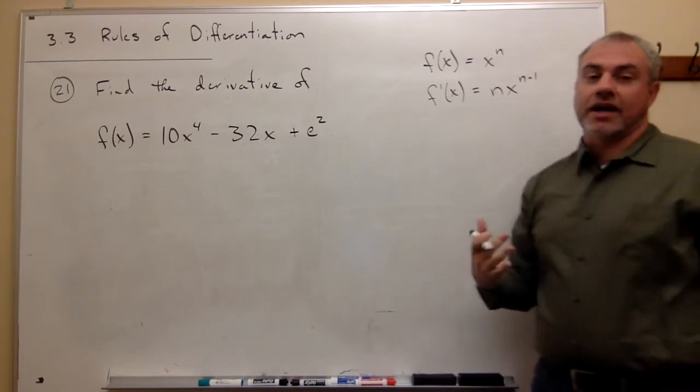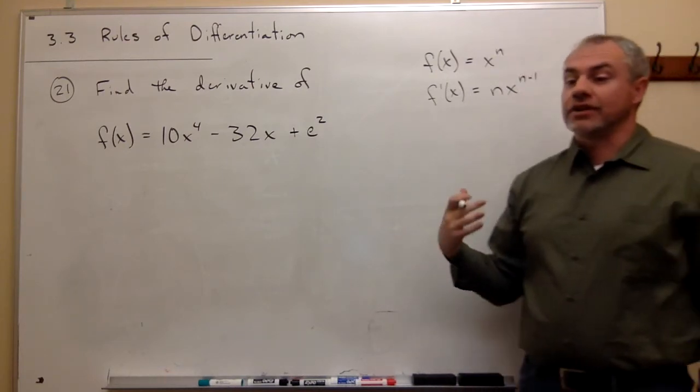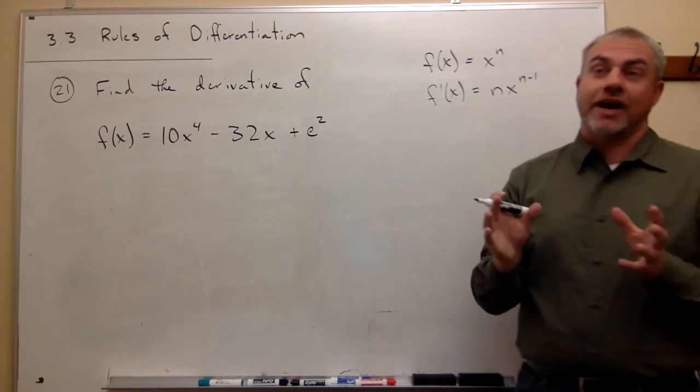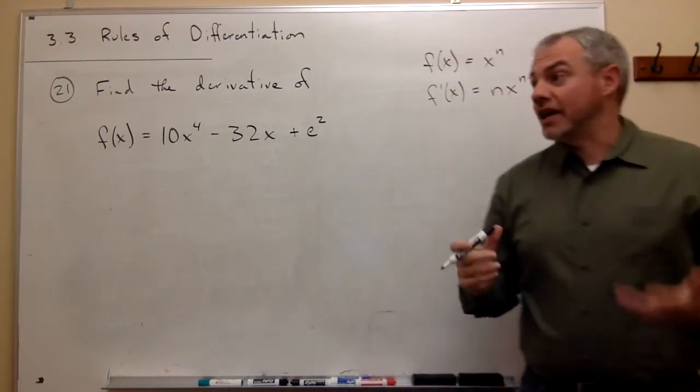We also have access to the sum rule, which says that the derivative of two things that are added together is the derivative of each one of them separately, added together.